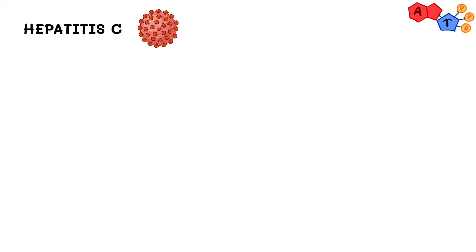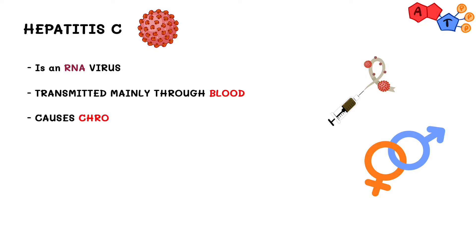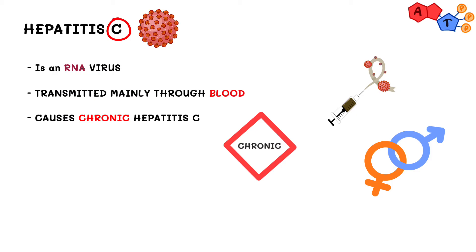Next is hepatitis C, which is an RNA virus. Transmission is mainly through blood. It's very important to remember that sexual transmission, while possible, is mainly associated with hepatitis B. Hepatitis C causes chronic hepatitis — C for chronic — so it does not typically cause acute presentations.